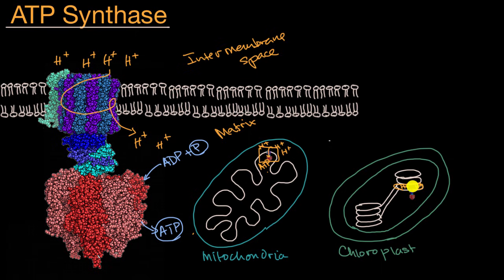But then those protons will travel through the thylakoid membrane through to this area, which is known as the stroma in chloroplasts. And they produce the ATP in the stroma.